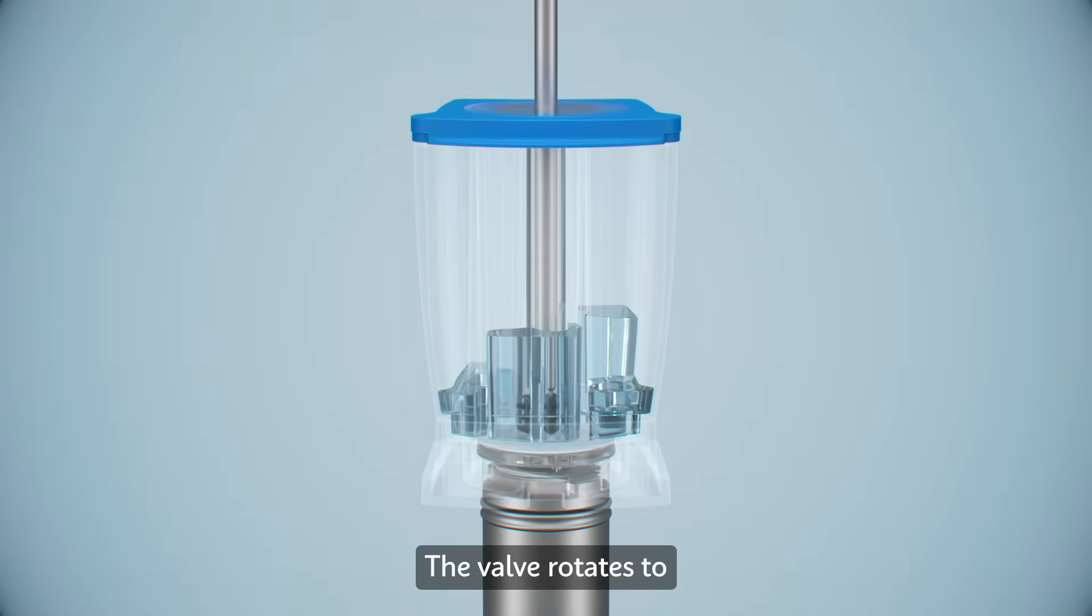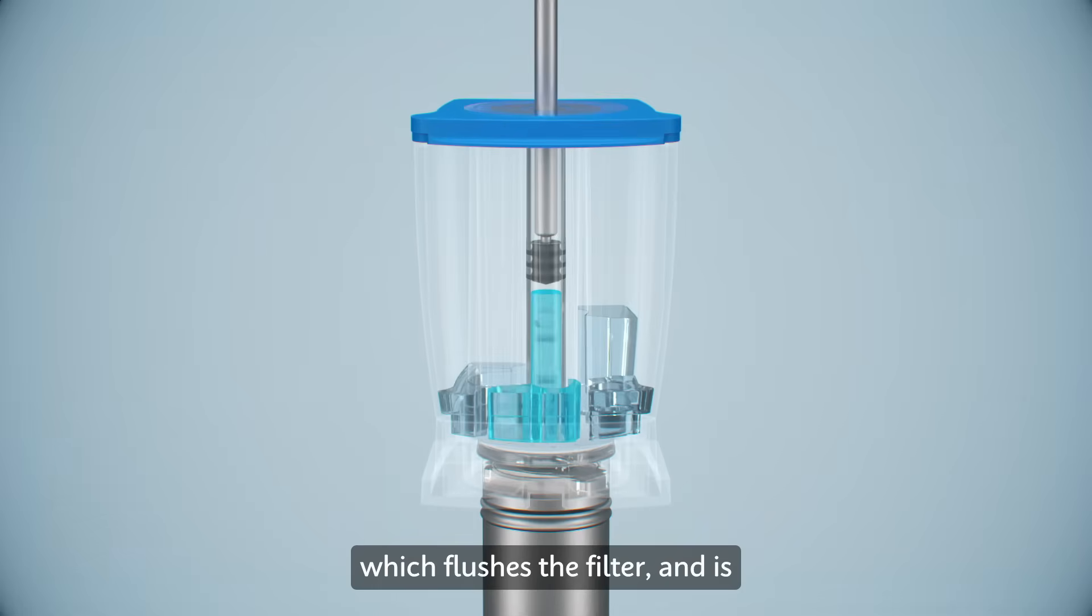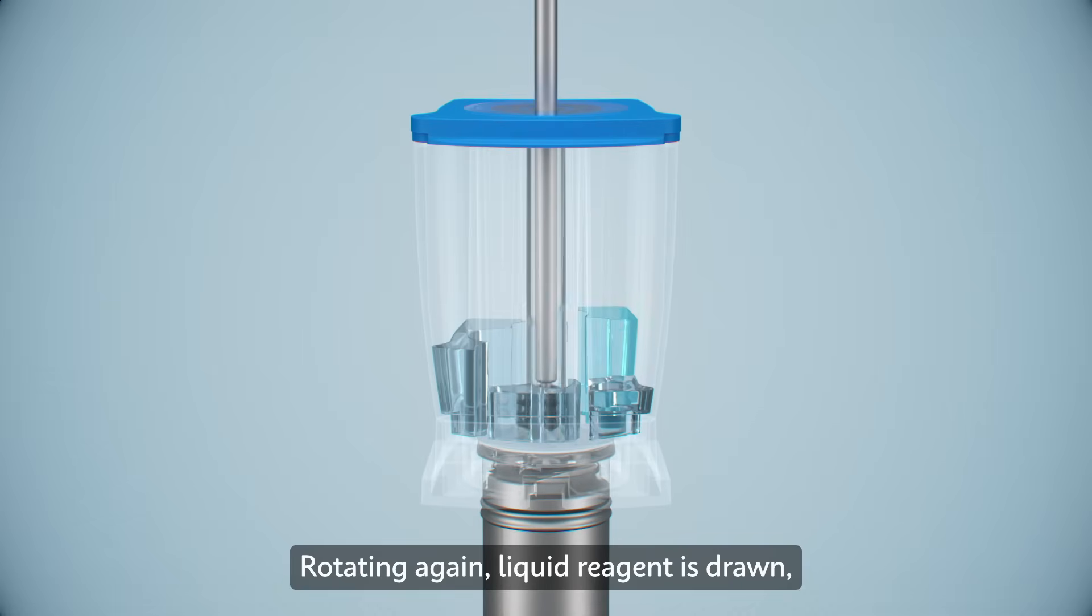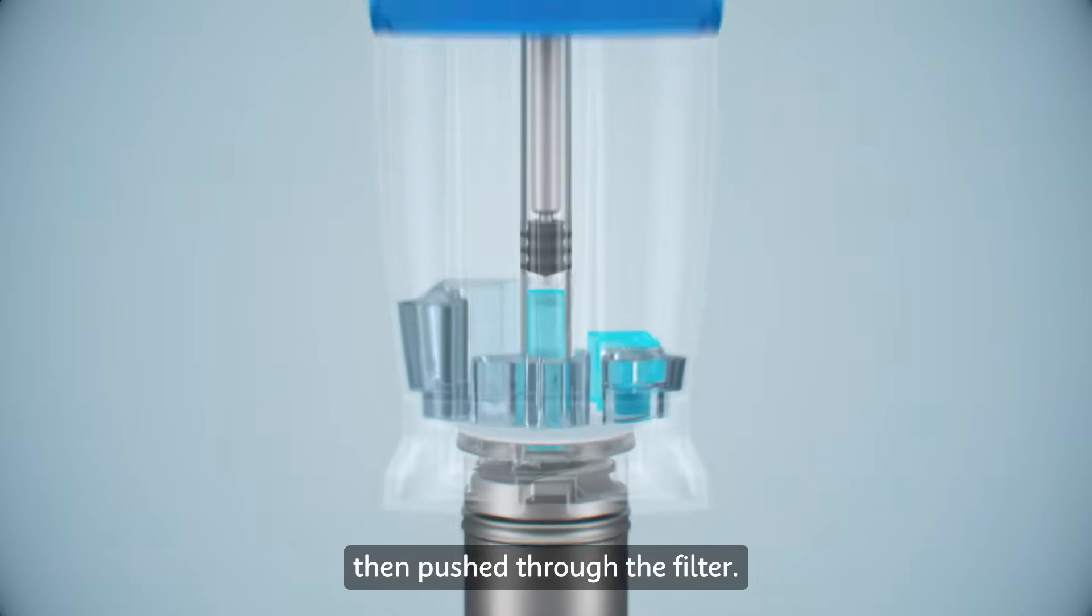The valve rotates to draw in wash fluid, which flushes the filter and is collected in the waste chamber. Rotating again, liquid reagent is drawn, then pushed through the filter.